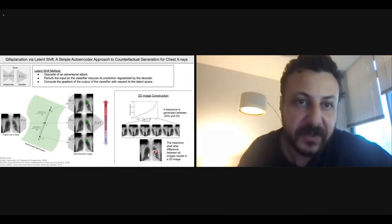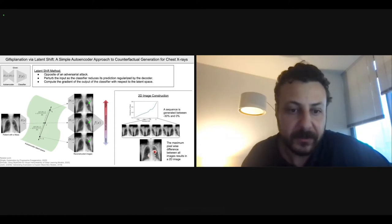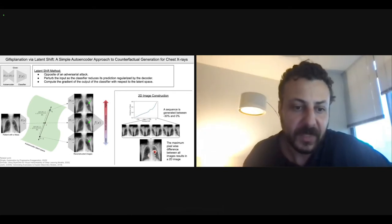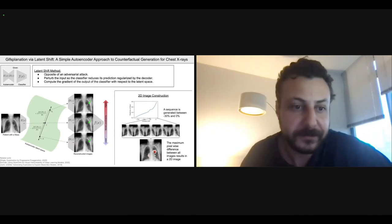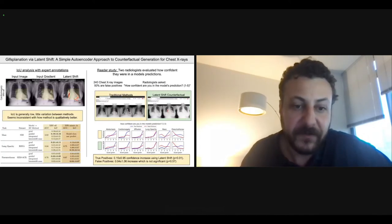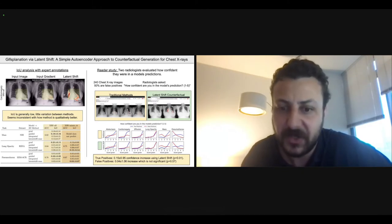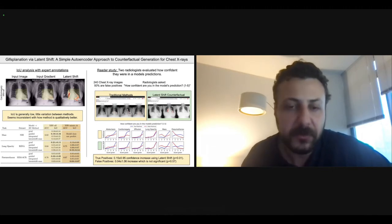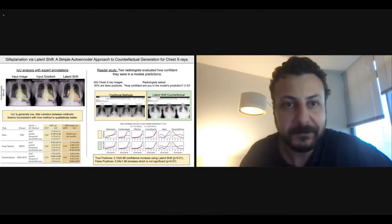The method we propose is called latent shift. The approach works with any encoder-decoder pair, such as an autoencoder and classifier. This approach generates an adversarial example to change the classifier's prediction, but the movement is regularized by the decoder. We find that using an intersection over union (IOU) analysis may not be the best, because the bounding boxes and segmentations were not designed to explain the counterfactual difference in these images. In a reader study with radiologists, we find that the latent shift counterfactual provides an improvement in confidence, but only for true positive predictions. False positive predictions have a negligible improvement in confidence. That's a summary — thanks.